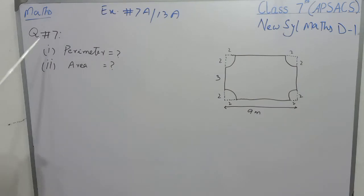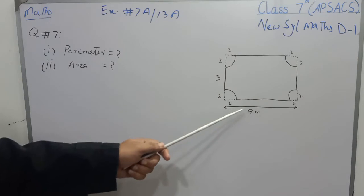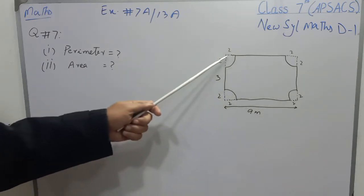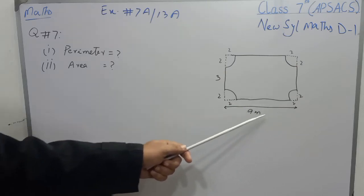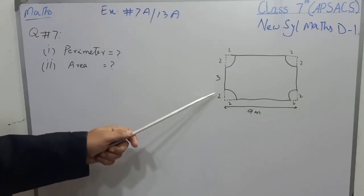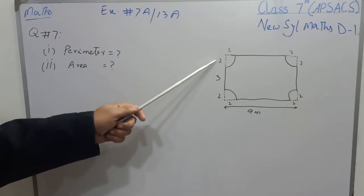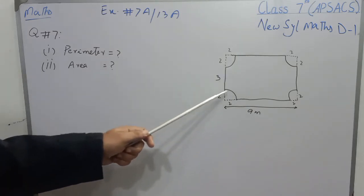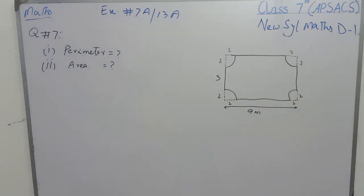Question No. 7: there is a figure in the form of a rectangle and on all the corners there are quadrants. The length of the rectangle is 9 meters and the width of the rectangle is 2 plus 3 plus 2, which is 7 meters. We have to find the perimeter and area of the figure.